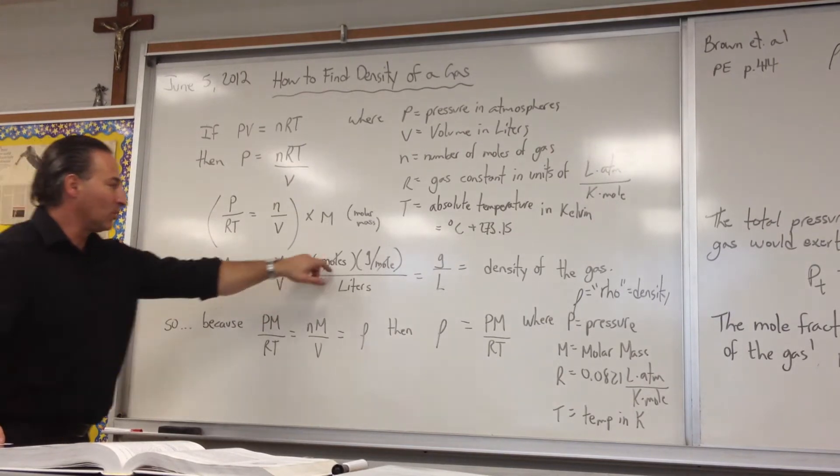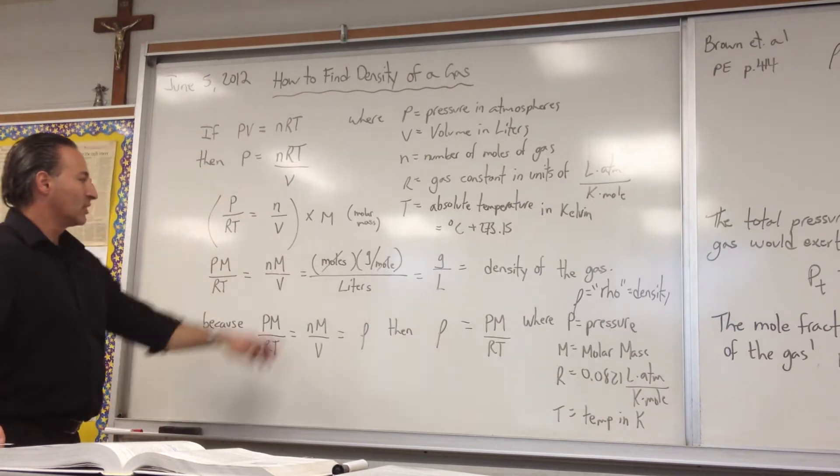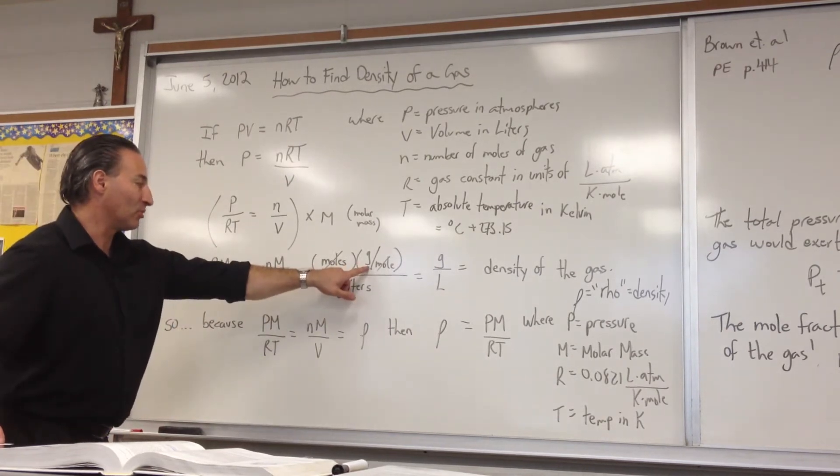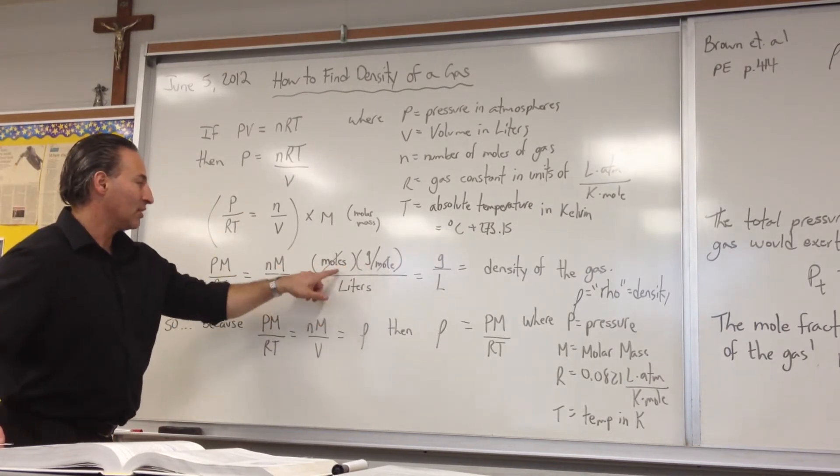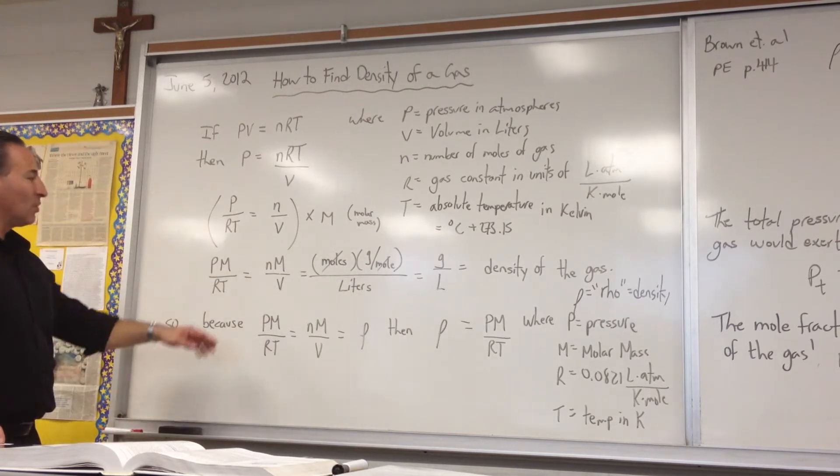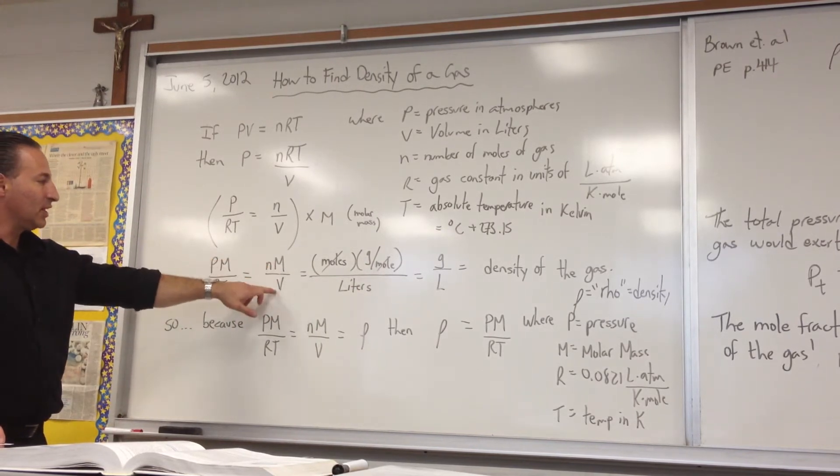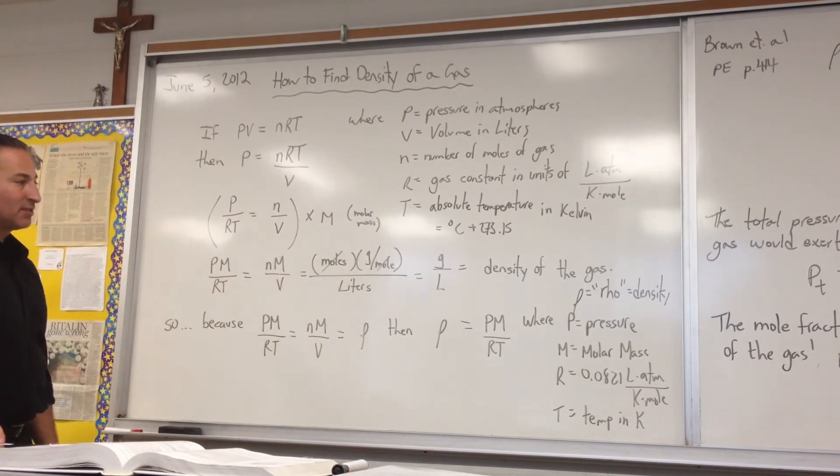This is moles, this is grams per mole for the molar mass, and this is liters for the volume. The moles cancel, so you end up with grams over liters. So when you multiply n times M over V, you get grams per liter as the final units, and grams per liter is the units of density.